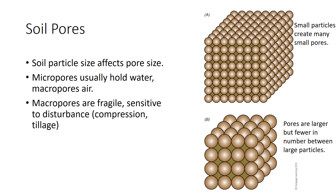Sometimes the larger micropores are distinguished as mesopores—medium-sized pores that hold readily plant-available water. It is worth noting that macropores are fragile and sensitive to disturbance. These pores tend to collapse when compressed or exposed to tillage, even or especially by rototillers, reducing macroporosity.